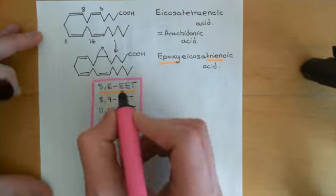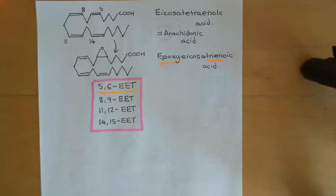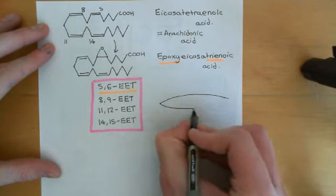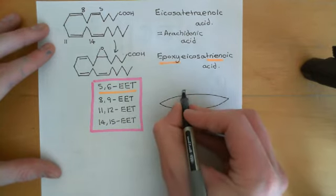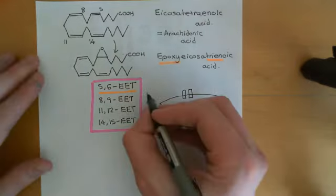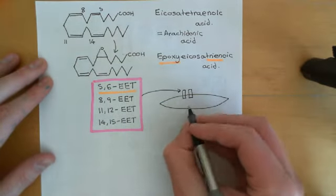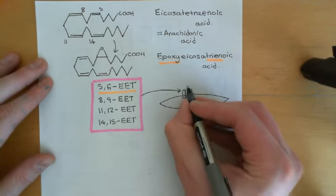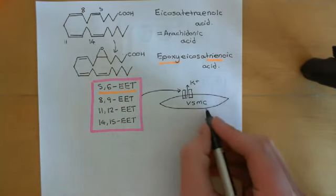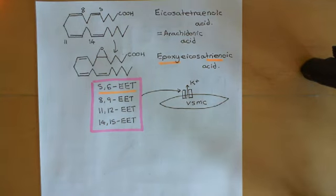The endothelial cells can produce these EET molecules in response to calcium, which causes liberation of the arachidonic acid needed to make them. These EET molecules then go to the vascular smooth muscle cells and cause potassium channels to open — the identity of these channels is still controversial — allowing potassium to leave the vascular smooth muscle cell cytoplasm, thereby hyperpolarizing the membrane potential, stopping activation of voltage-gated calcium channels, and therefore stopping the generation of calcium signals which lead to contraction.